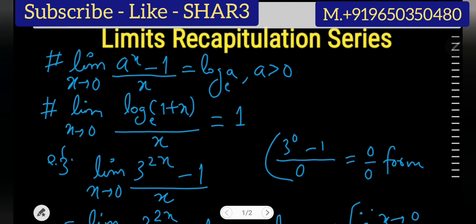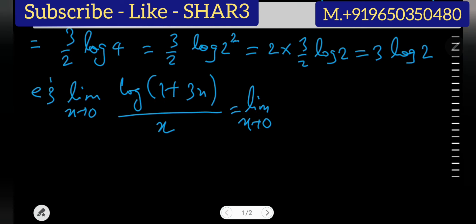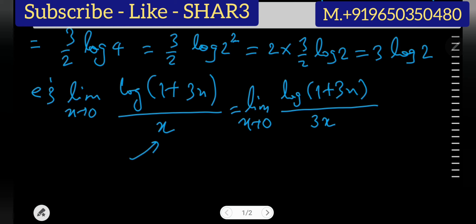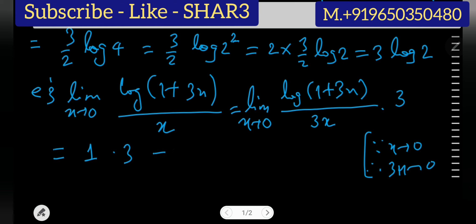The formula is: limit x approaches 0 of log(1+x) over x equals 1. In our problem the variable inside is 3x, so we must have 3x in the denominator. We already have x there, so we multiply the denominator by 3 and divide by 3 also. Since the limit of x is 0, the limit of 3x is also 0, so the log part gives 1, and the overall answer is 1 times 3 equals 3.